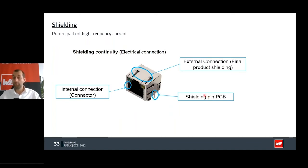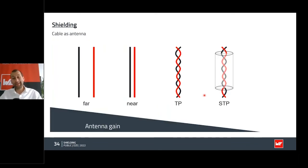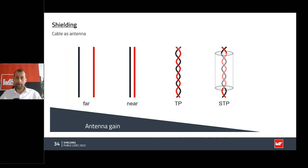Cables can act as antennas too. If you have current going in one direction and returning in the other, you create a loop — and loops have quite good antenna gain. Reduce the loop by either decreasing the distance between conductors or by twisting the cables. Note that twisting only works for a signal-return pair; if you twist two signal lines you will create crosstalk. To further shield everything you can also use electric field shielding — essentially just something conductive.